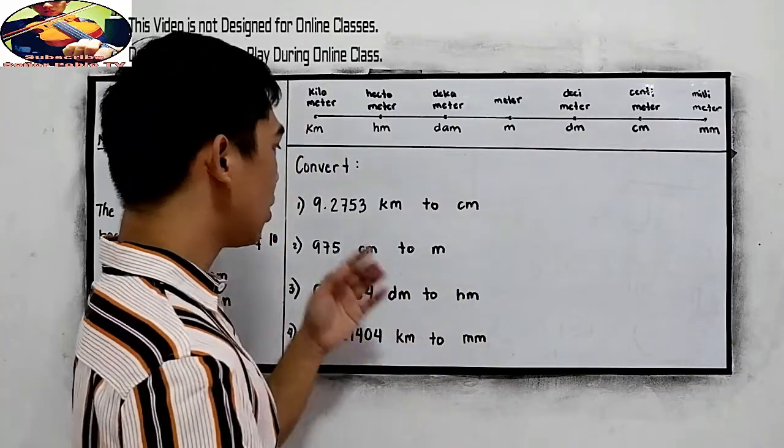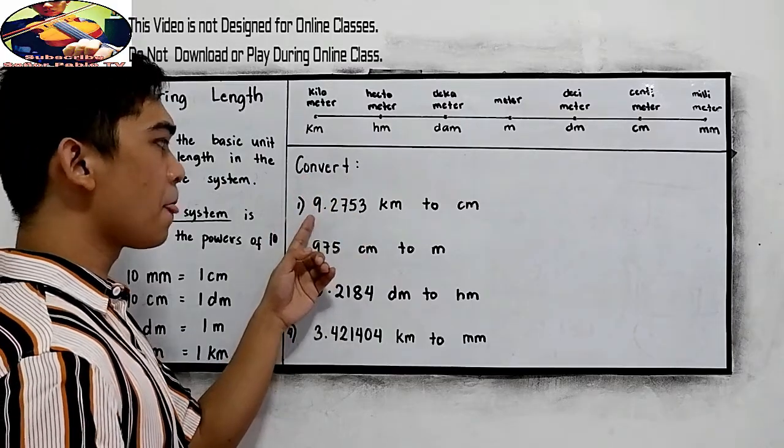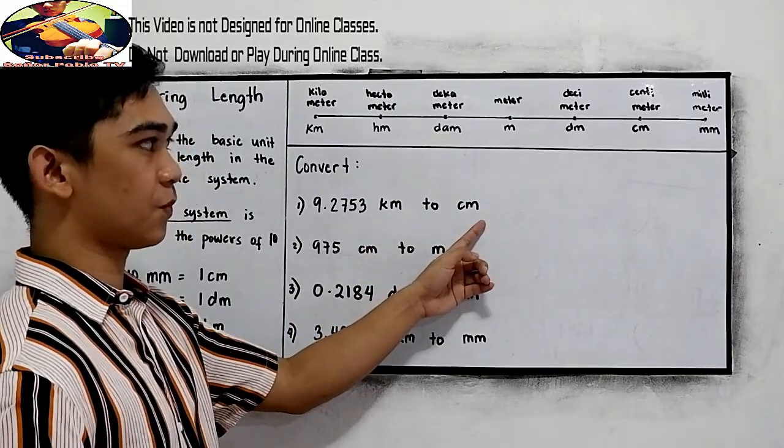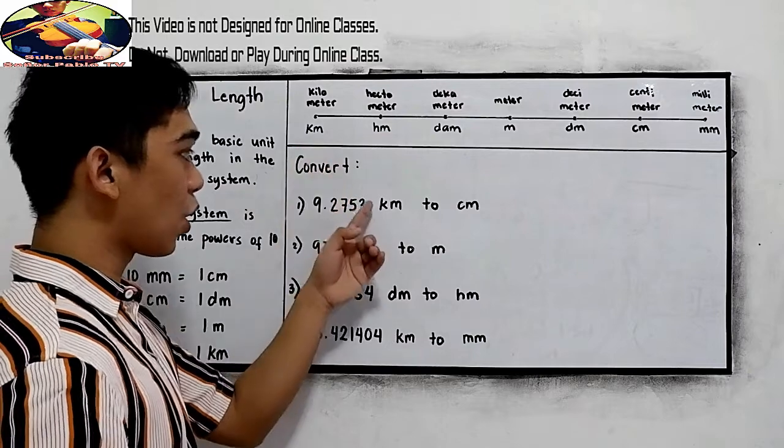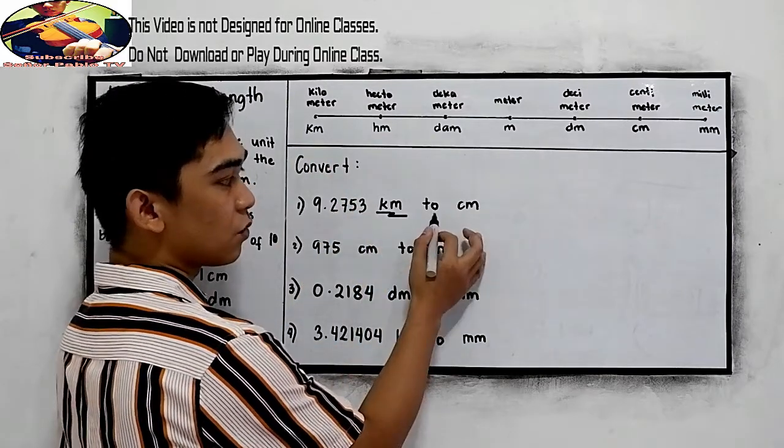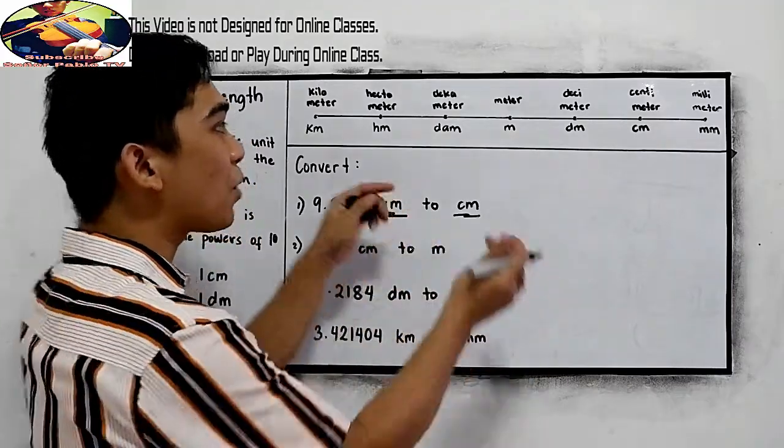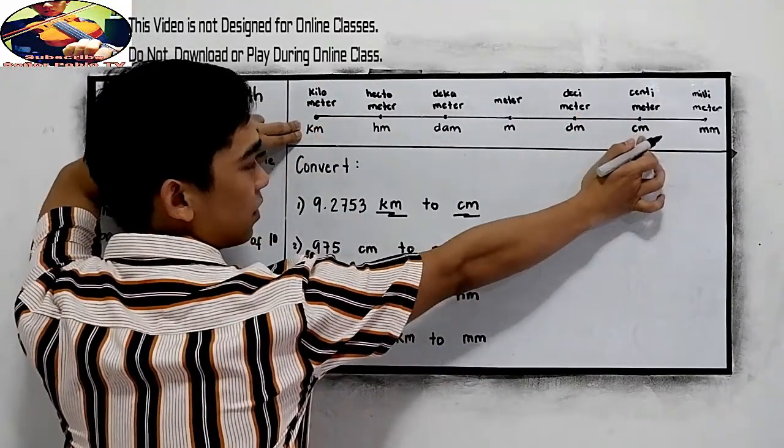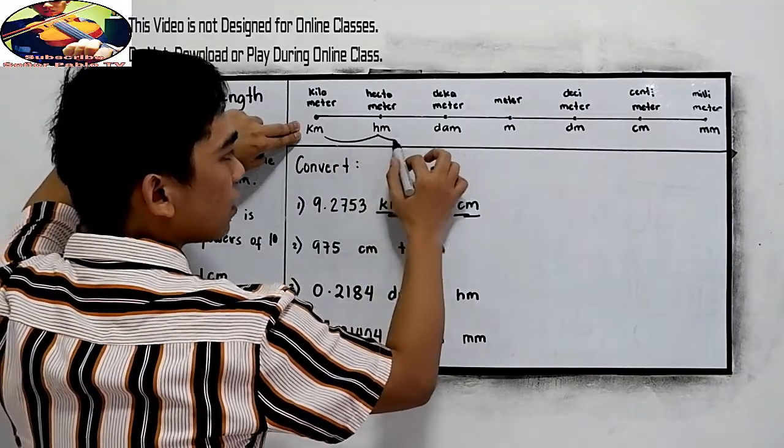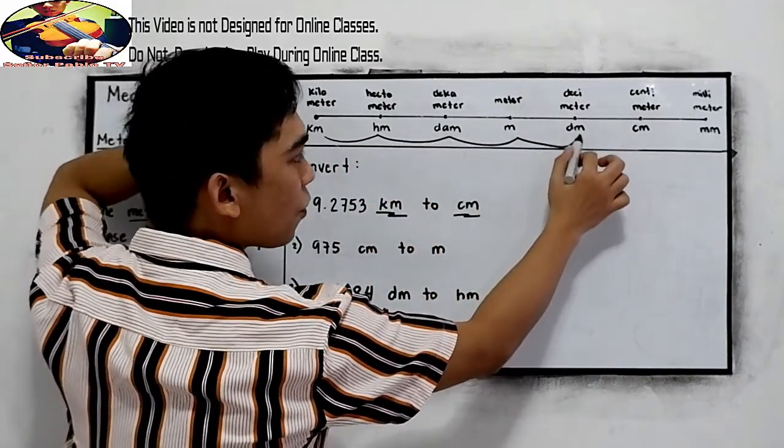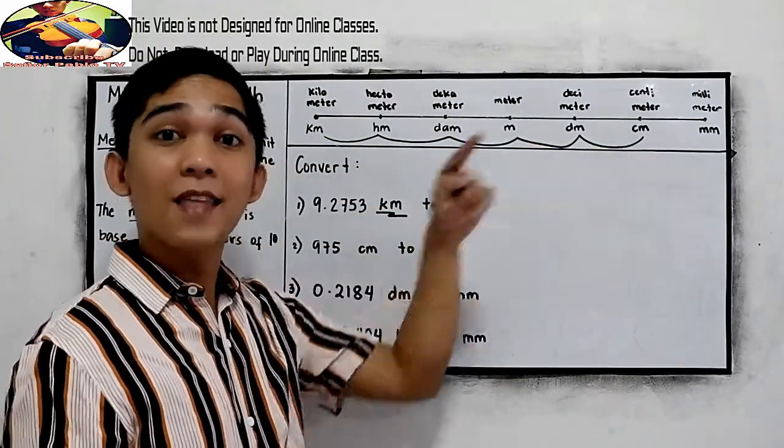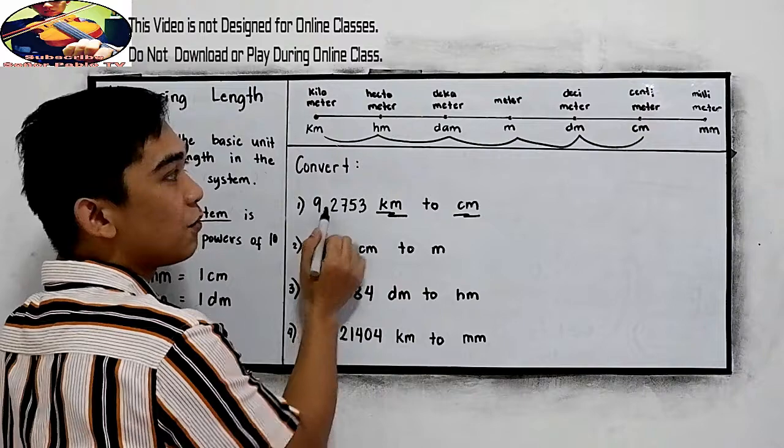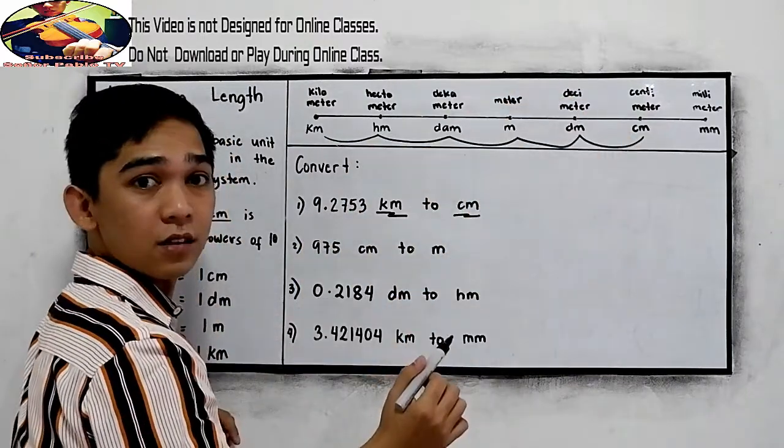Let's say, we have number 1. We are going to convert 9.2753 km to cm. Notice that we are here at kilometer, we need to convert to cm. In our table, the kilometer is located here. How many units from the cm? That is 1, 2, 3, 4, 5. So, 5 units. That means in our decimal point, our decimal point is located here, we need to move 5 times to the right.